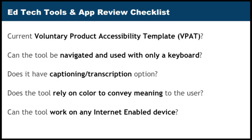Some of the questions on the checklist: one of the first asks whether a VPAT exists — a Voluntary Product Accessibility Template. By having the person understand what a VPAT is and how to find it, such as in the footer under the accessibility menu of a website, they get a better understanding of what it means for something to be accessible. Additional questions include: can the tool be navigated with only a keyboard? Does the item have captioning and transcription if audio is available? Does the tool rely solely on color to convey meaning? Does the tool work on any type of internet-enabled device?